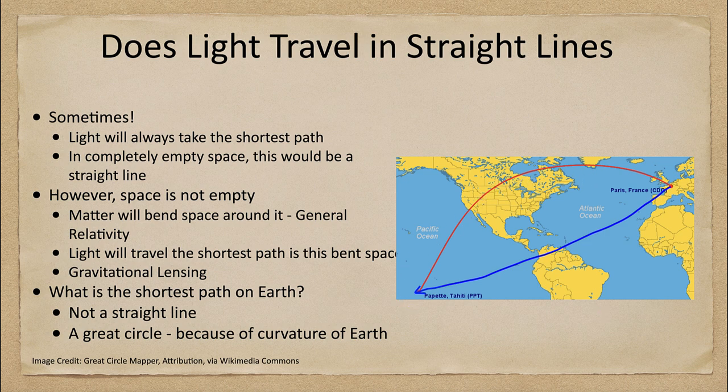Now of course, when we distort it — when we make the globe flat, we take the globe and stretch it out — that deforms things. The closer you get to the poles, the more deformed it gets. So that makes it look like a much longer path, but in reality it is much shorter to take that path — in this case, from Paris going up over through Canada and down, rather than traveling what looks like the straight line on a flat map from Paris to Tahiti.